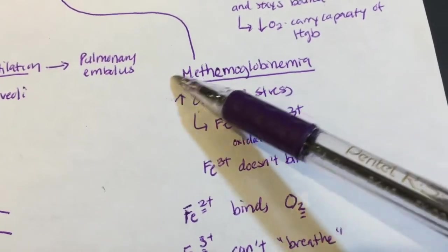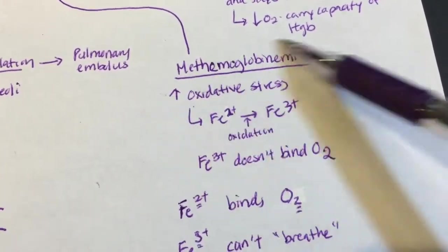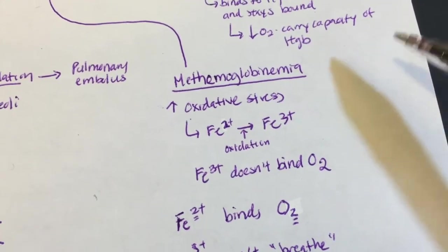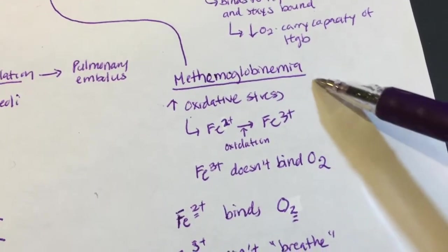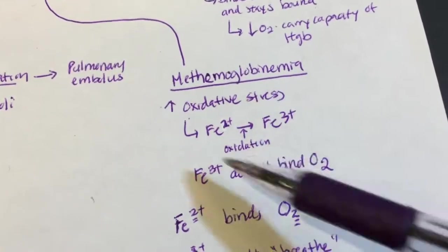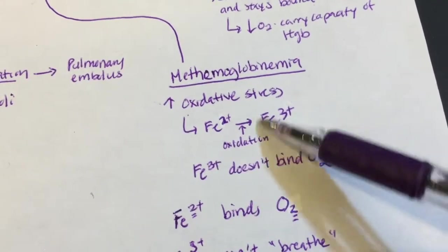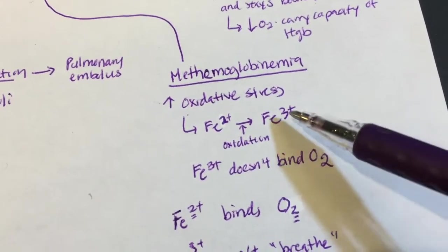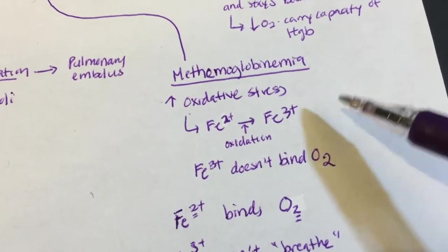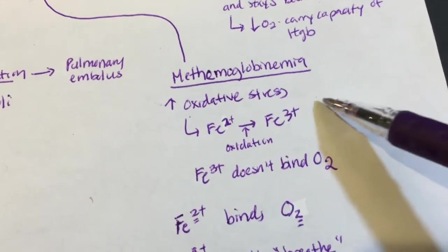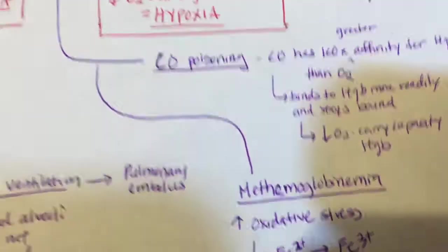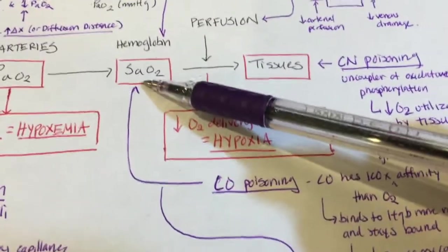Methemoglobin is seen with increased oxidative stress, and also in neonates, where the enzymatic machinery to convert Fe3+ back to Fe2+ is not yet fully developed. In day-to-day life Fe3+ forms but gets converted back; in infants that conversion machinery isn't fully operational, so methemoglobin can be a clinical concern in neonates as well.